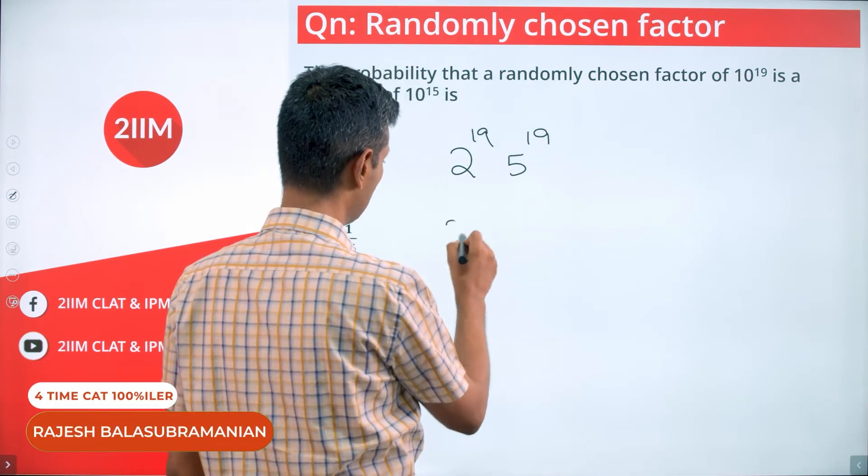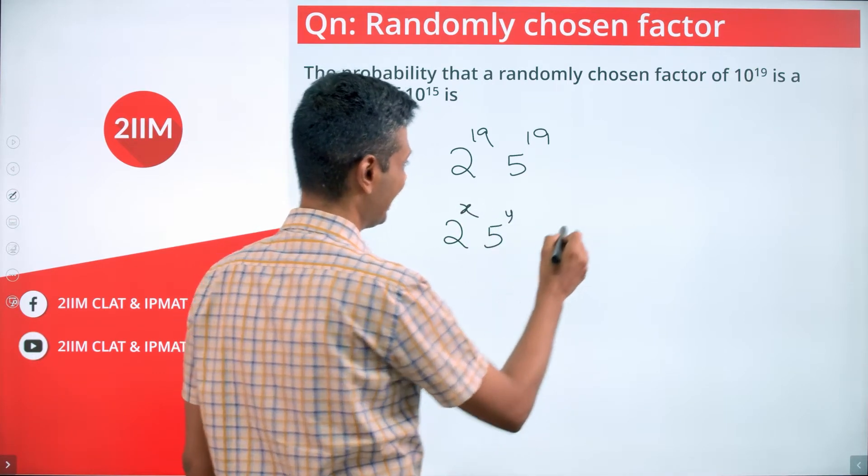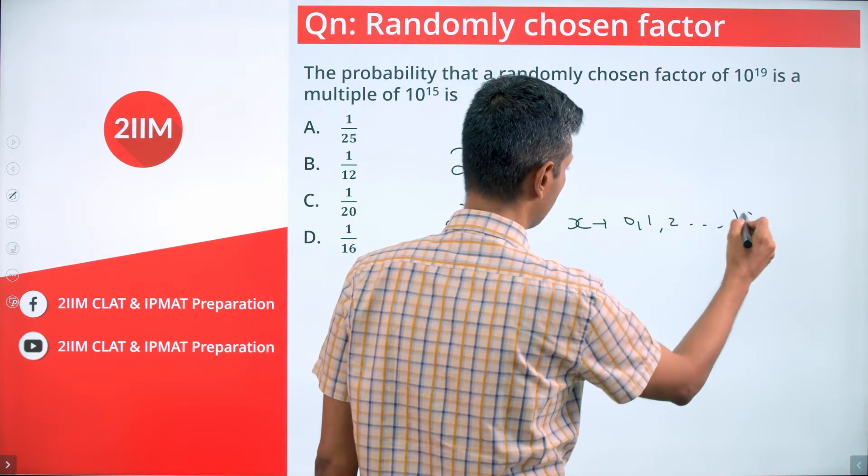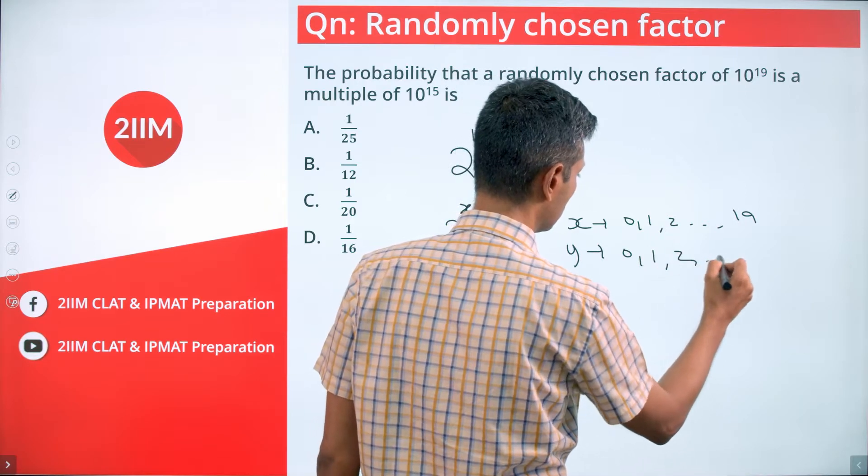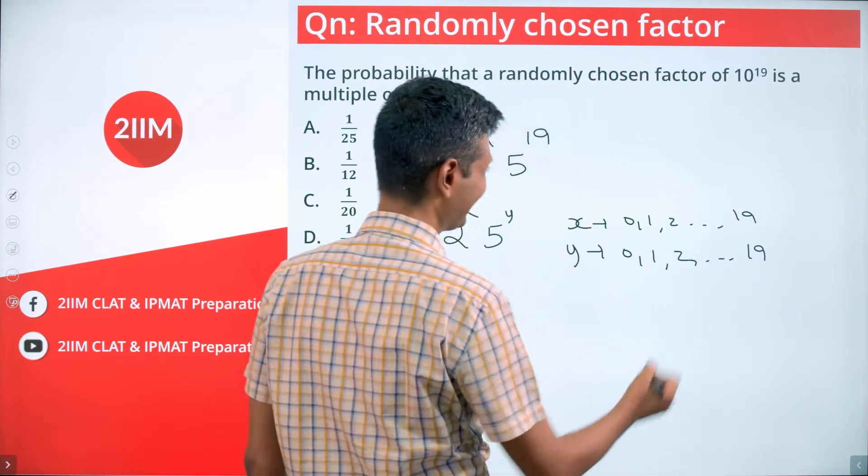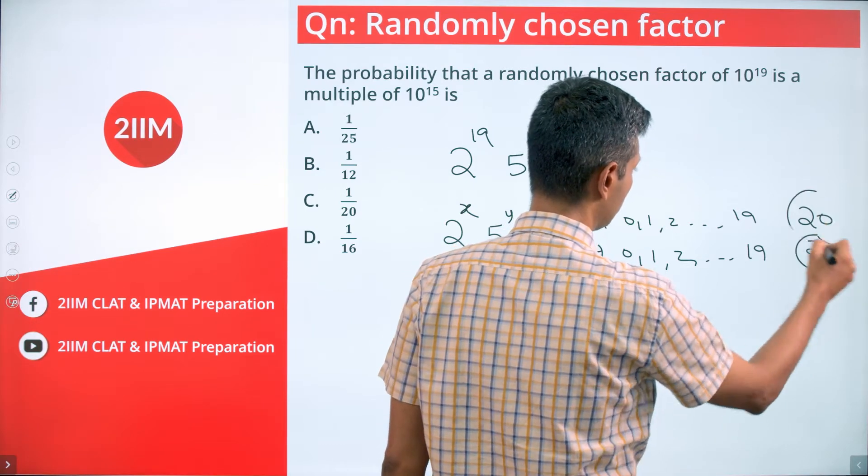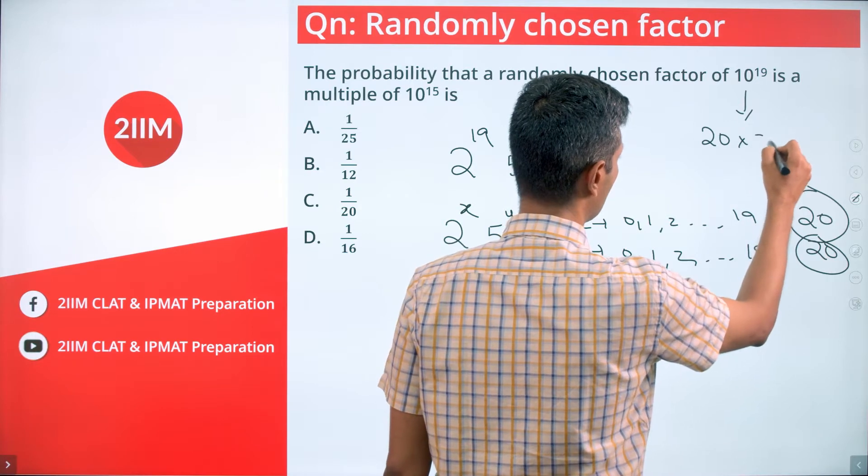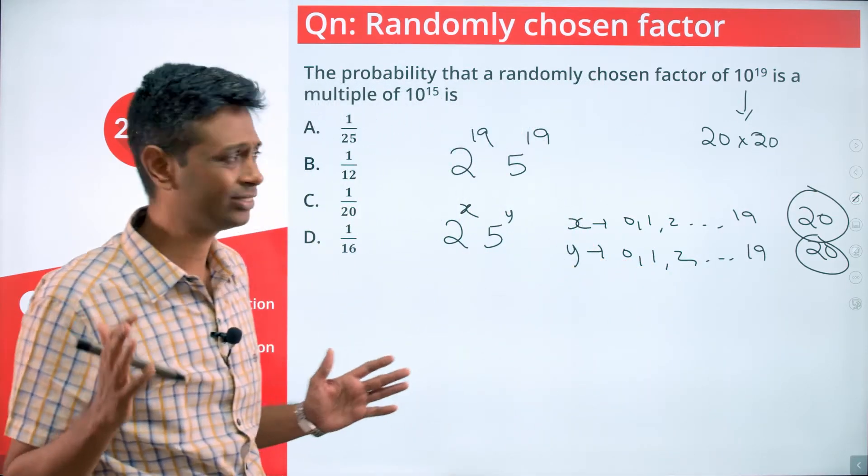Any factor of this number will be of the form 2 power x into 5 power y. x can take values from 0 to 19, y can take values from 0 to 19. Or x can take 20 values, y can take 20 values, or this number has 20 into 20, 400 factors.